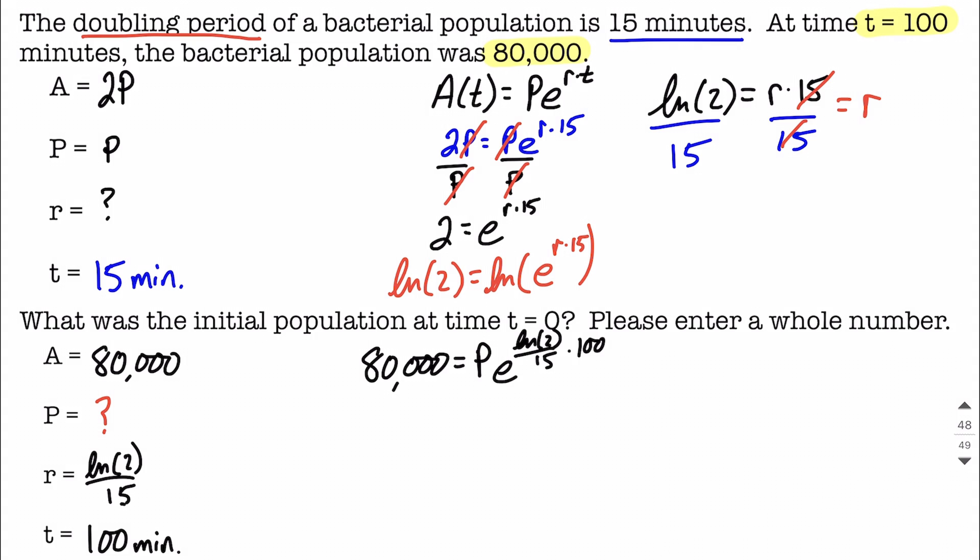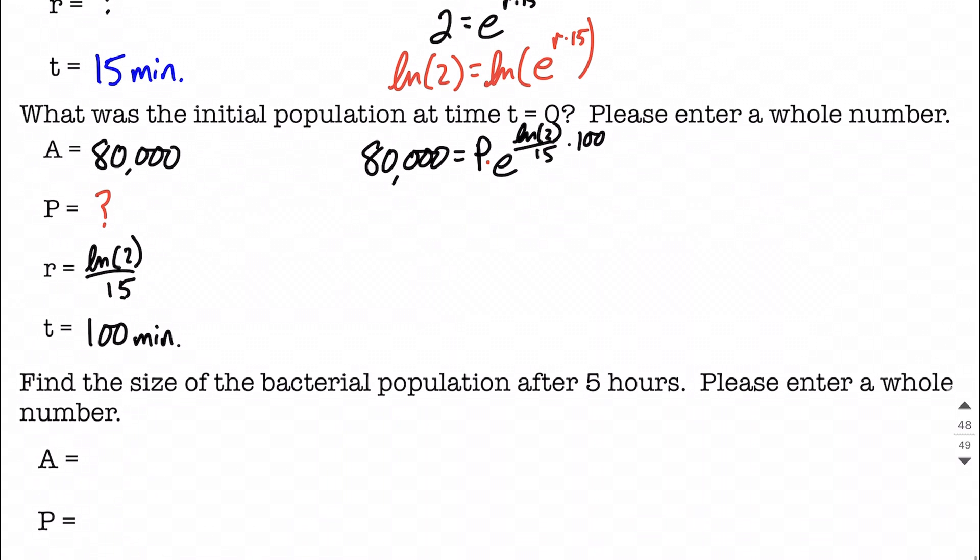Now to get p on one side by itself, p is connected with the entire right-hand side of this equation with a multiplication. So the next thing I'm going to do is to isolate p, we're going to divide by that entire e raised to the power. So we could do a little bit of reducing down. We could do natural log of 2 over 15 times 100, or 100 divided by 15 is the same thing as 20 thirds, natural log of 2 going on here, still in the exponent.